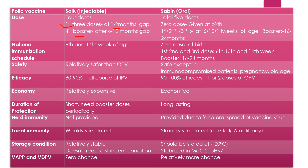OPV is given at birth, then at six, ten, and fourteen weeks, with a booster at 16 to 24 months. Regarding safety, IPV is relatively safer than OPV; OPV is safe except in immunocompromised patients, pregnant women, and the elderly. Efficacy of IPV is 80 to 90 percent, while OPV is 90 to 100 percent. IPV is relatively expensive compared to OPV. IPV has a shorter duration of protection and requires periodic booster doses, while OPV is long-lasting and provides herd immunity due to fecal spread of the vaccine virus.